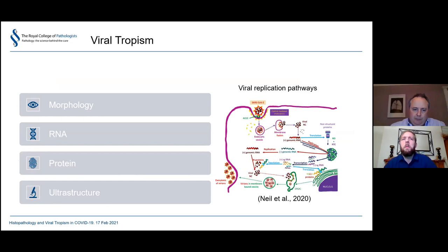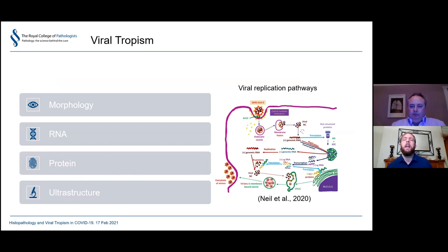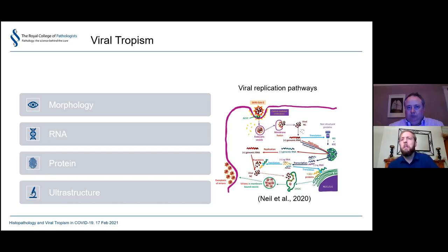Thanks Mike. As Mike was saying, the last talk focused mainly on histopathological findings in COVID-19. I'm going to try to link those back to the presence or absence of the virus in various tissues. Our attempts to look for the virus began with morphology — looking for viral inclusions — which weren't prominent and we weren't able to find in our series. Although there are some suggestions in the literature, this is not a very sensitive or specific finding, so you have to move on to more advanced techniques.